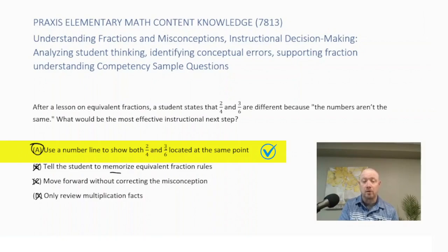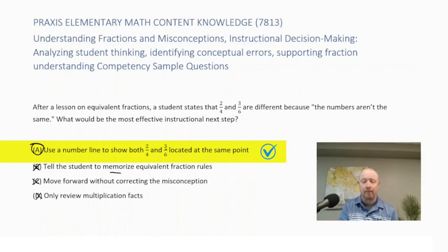A group of students struggles to explain why multiplying a number by three-fourths makes it smaller. Which instructional decision best addresses this confusion? Is it A, tell students to memorize rules for multiplying fractions? Is it B, switch topics to fraction division? Is it C, repeat multiplication drills? Or is it D, use scaling problems, e.g. resizing a recipe to demonstrate the effect?